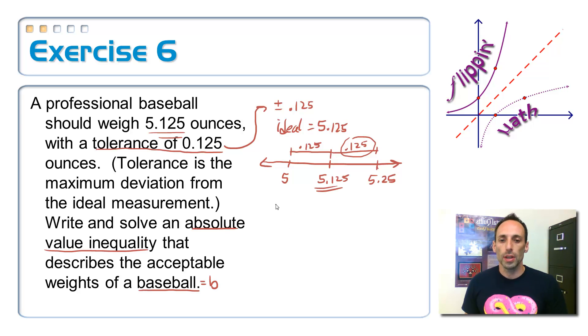Okay, so I'm going to write this. Let's use this acceptable weight of a baseball. Let's just use the variable b. Does that sound okay? So I'm going to write this as absolute value of b minus 5.125. So, so far, this statement in math says the distance away from 5.125. And I want everything that's in between there. Anything in between those two dots is okay. So that distance has to be less than or equal to, and then what was that distance? 0.125. Okay. So, there is my absolute value inequality.